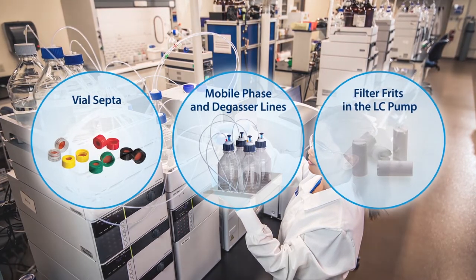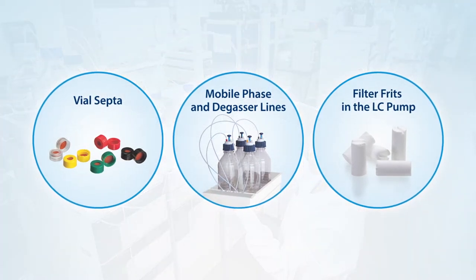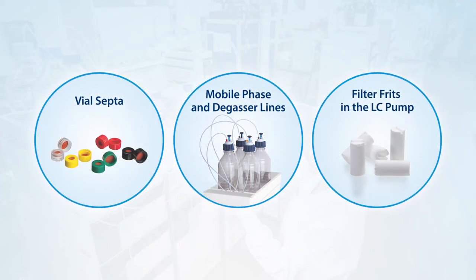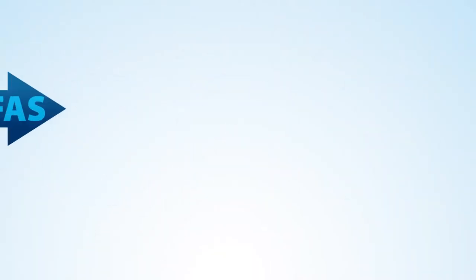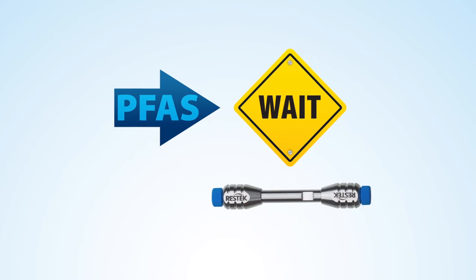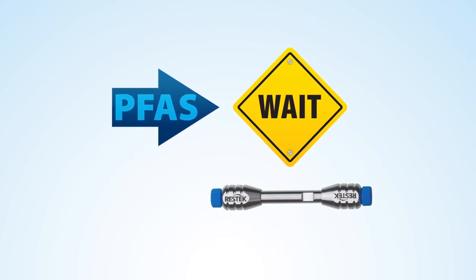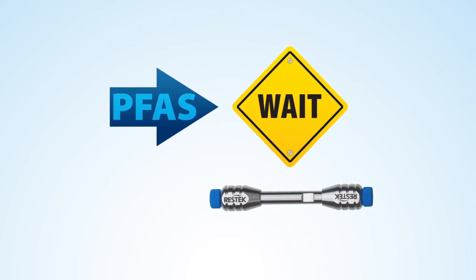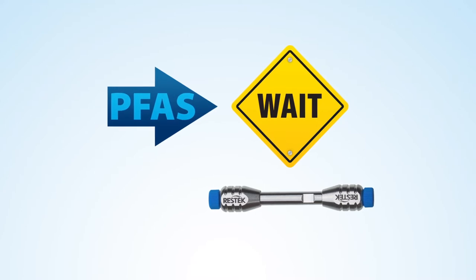However, there is an easy solution: a PFAS delay column. Just as the name implies, it delays PFAS, specifically the residual PFAS contamination introduced before the injector in your LC MS MS.